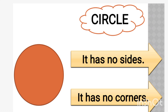What is the meaning of corner? When two lines touch each other at any point, that is called a corner.